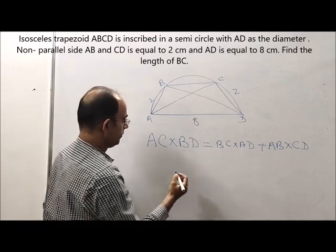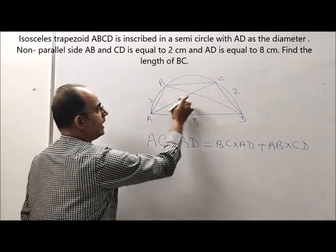That means BC into AD plus AB into CD. AB into CD is 2 into 2, which is 4. Now putting the values, we know AC is root 60.